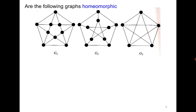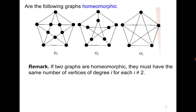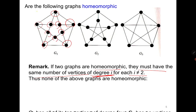What about graphs g1, g2, g3 — are they homeomorphic? They are not, because none of them have degree-2 vertices. Only degree-2 vertices result from subdivision. Other than degree-2 vertices, the number of vertices with degree greater than 2 must be the same for homeomorphic graphs, which is not the case here. You can see there are four vertices of degree 5 in one, all degree-3 vertices in the middle one, and five degree-3 vertices in the last. So none of them are homeomorphic.